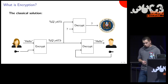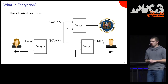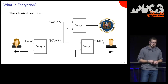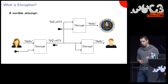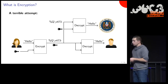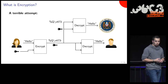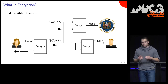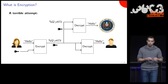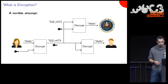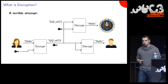A problem we have here is that Alice and Bob have to agree on the key in advance. Alice cannot simply send the key to Bob, because if she did, then the attacker who is eavesdropping on the connection learns the key as well, and could just decrypt the same as Bob. So this does not work — this is a terrible attempt.